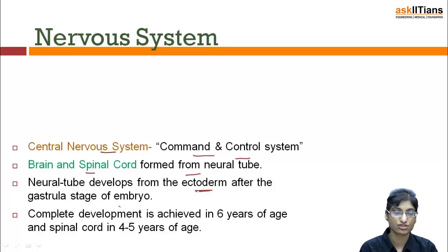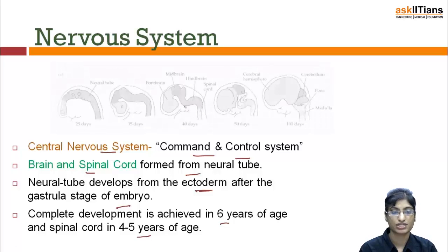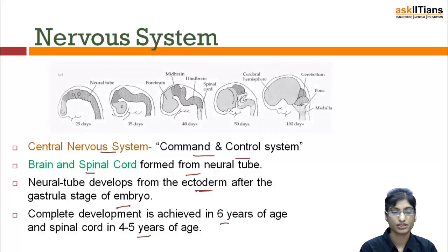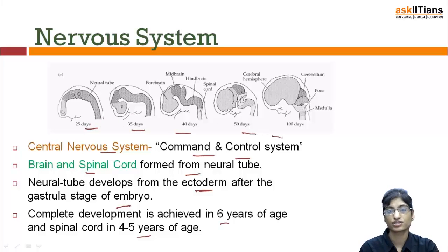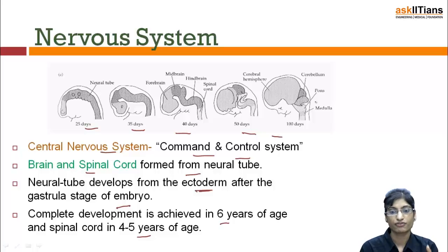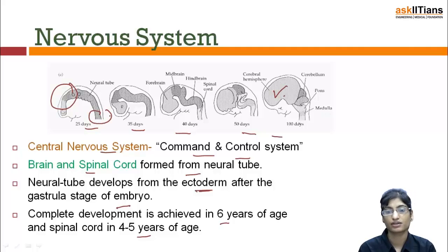From the gastrula stage of the embryo, complete brain development is achieved by 6 years of age, and spinal cord development by 4 to 5 years of age. In this image, the development of the neural tube is shown — how the brain and spinal cord are formed at 25 days, 35 days, 40 days, 50 days, and 100 days. From the anterior part of the neural tube the brain is formed, and from the posterior part the spinal cord is formed.